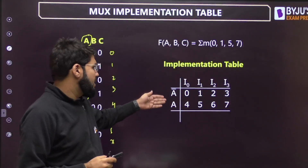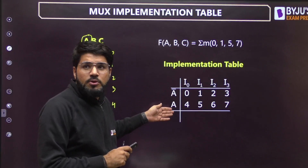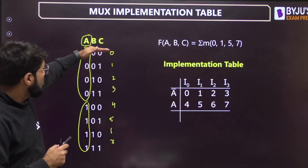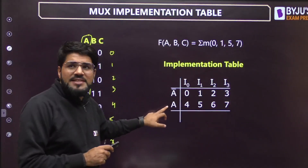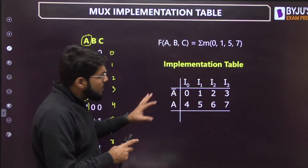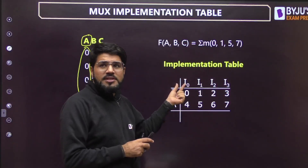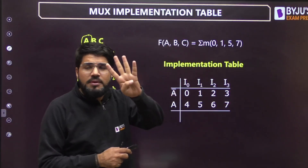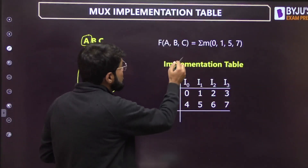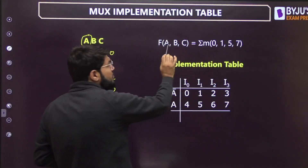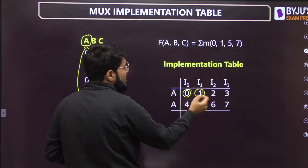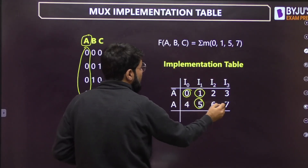In the implementation table there will be two rows — one corresponding to A-bar and one corresponding to A. A-bar represents the cases when A is low, that is at minterms 0, 1, 2, 3. A means A is high, that is at 4, 5, 6, 7. There are four columns corresponding to the four input lines of the 4x1 MUX: I0, I1, I2, I3. Next, highlight the given minterms of the function: 0, 1, 5, and 7.